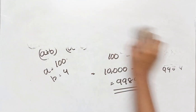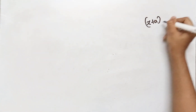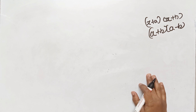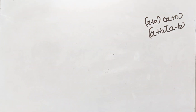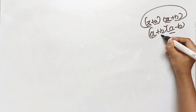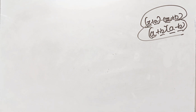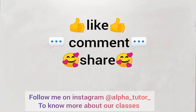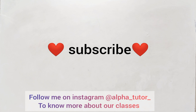So we have answered all three questions using the identities: (x + a)(x + b), and (a + b)(a - b). If you have any doubts, please comment below. Subscribe to our channel. Thank you.